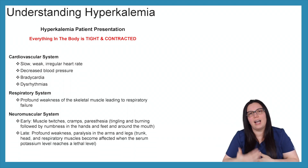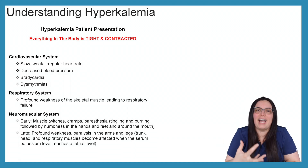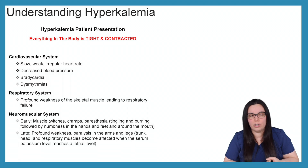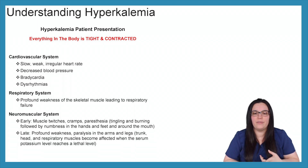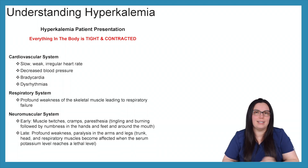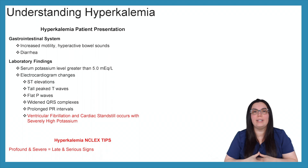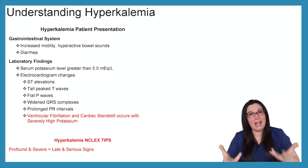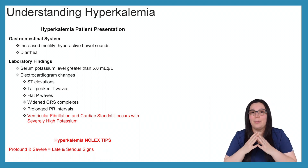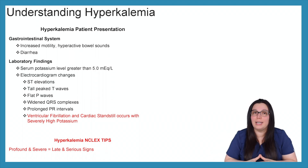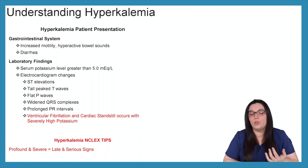As we move further into hyperkalemia, we're going to have those profound weaknesses — remember, profound is late — and paralysis of the arms and legs, as well as potentially the trunk, head, and respiratory muscles becoming affected when serum potassium levels reach a lethal level. For the gastrointestinal system, remember we are tight and contracted, so you're going to have a hyperactive GI system with increased motility and hyperactive bowel sounds. These patients are going to have massive amounts of diarrhea — whereas with hypokalemia we see constipation, with hyperkalemia they just cannot stop. Serum potassium levels will be greater than 5 milliequivalents per liter.